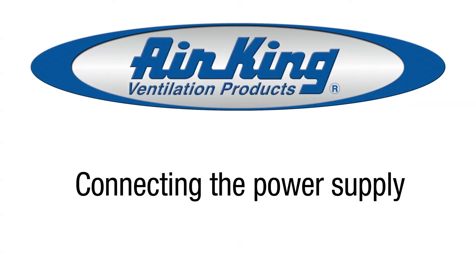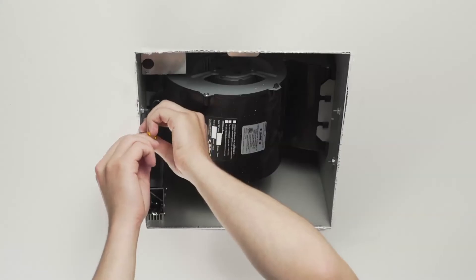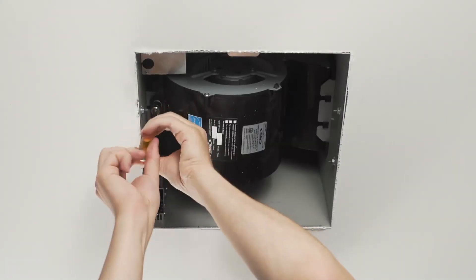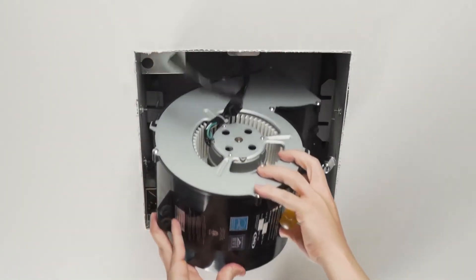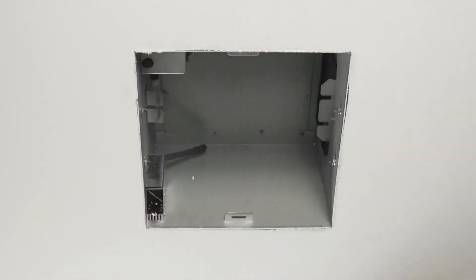Connect the power supply to the unit. Remove the blower from the housing by unscrewing the two screws holding the blower in place. Lift up on the blower and slide it out of the tabs on the housing.